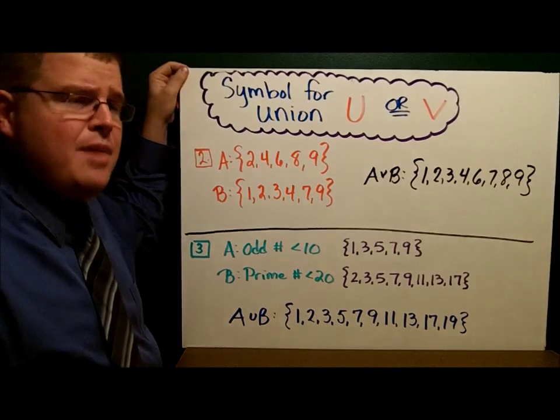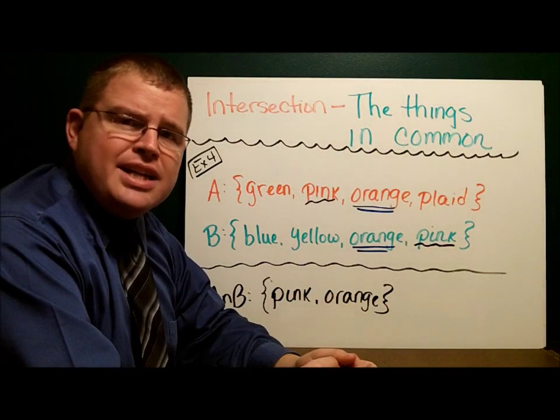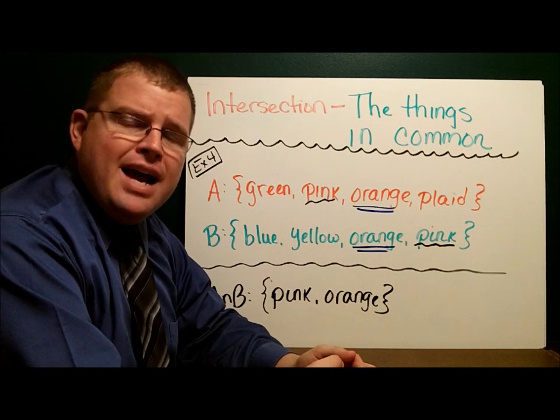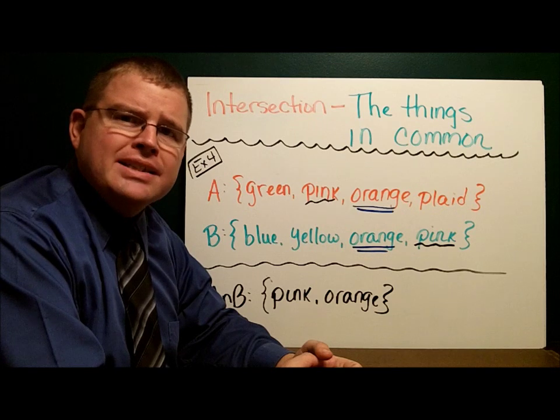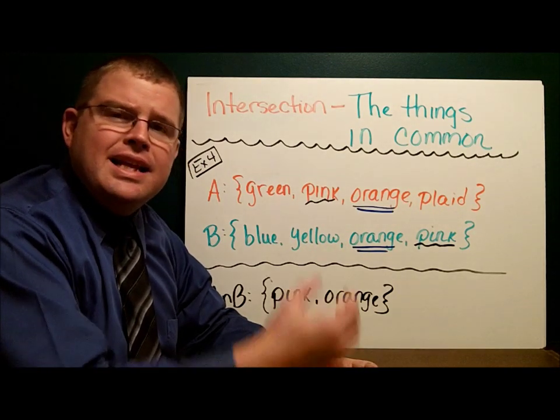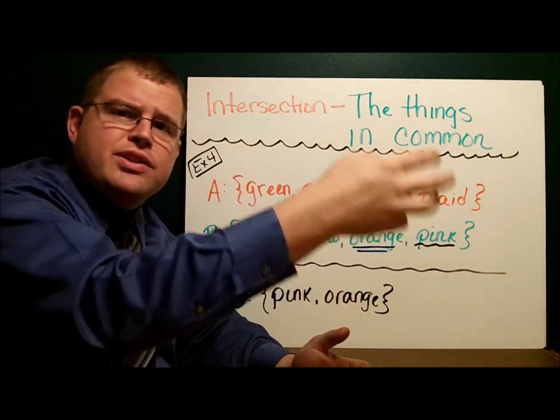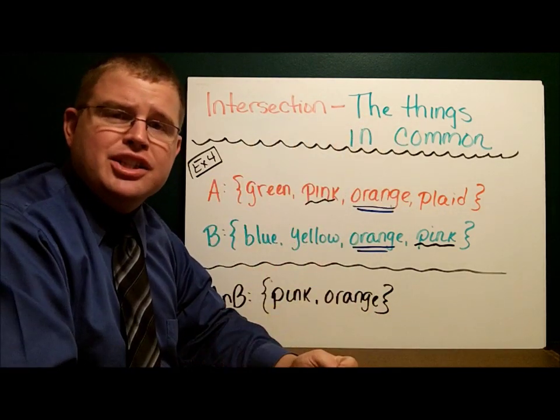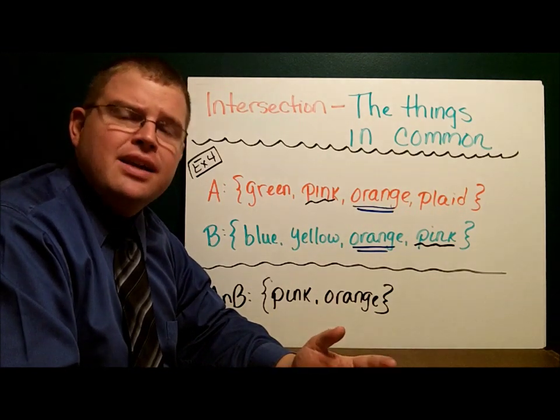The next operation that we're interested in is the intersection. When we say intersection, we mean what things do they have in common. Remember, we did the Venn diagram and we had the pets. Some people had dogs, some people had cats, and then there was Luke in the middle. He had a dog and a cat, so he was in both circles in the intersection.